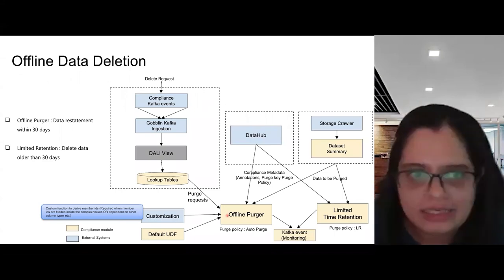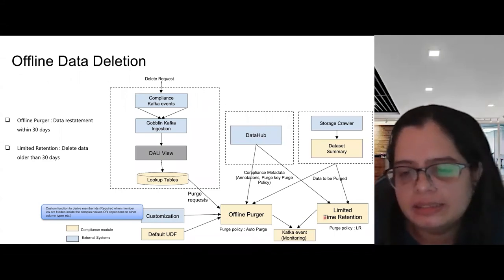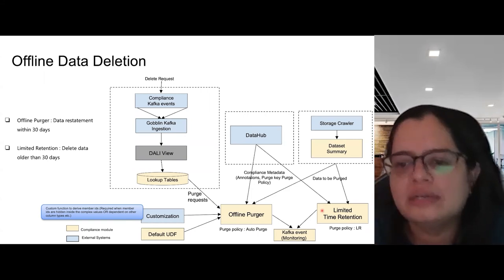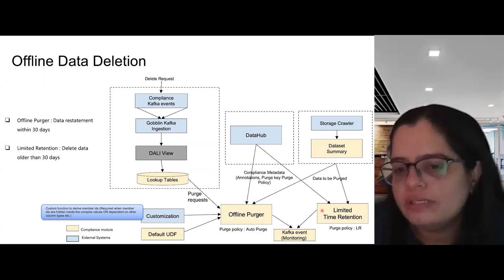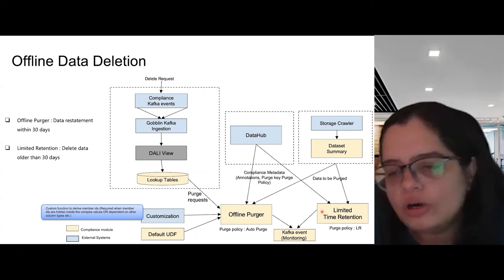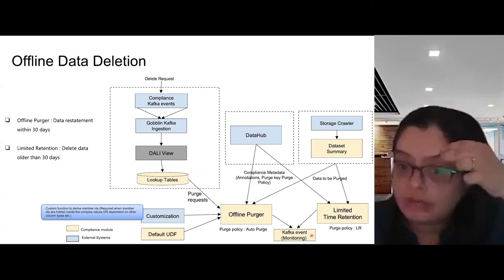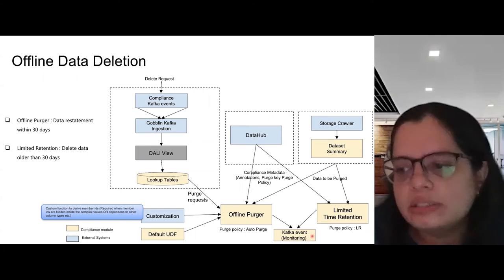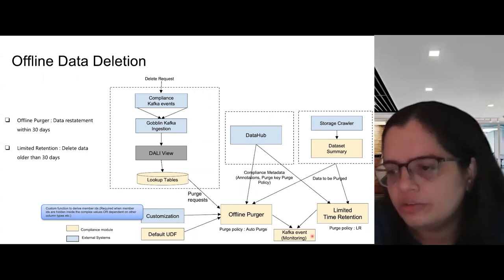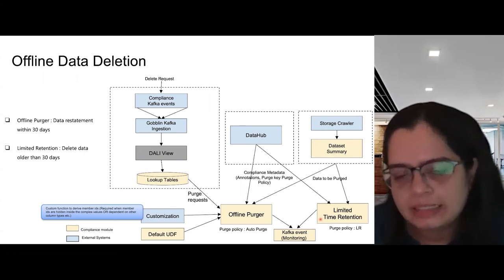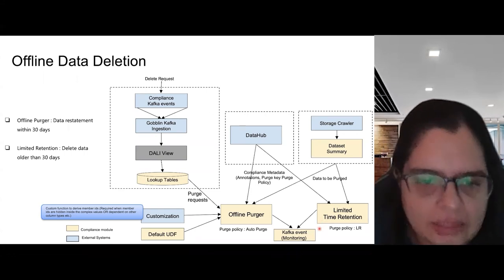If a user selects limited retention instead of data restatement, we don't need the lookup table at all — we simply delete everything older than 30 days. Both these pipelines and manual purge pipelines all emit Kafka events for monitoring purposes, and a real-time dashboard is created showing the status of each dataset at all times. If a failure or a leak is detected, appropriate action is taken.